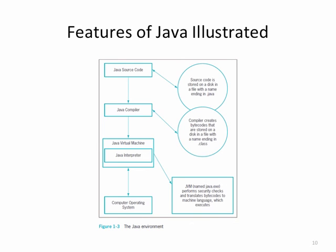For a visual of what we just talked about: the Java source code — what the programmer writes — has a file extension of .java. The Java compiler translates the Java source code into bytecode that will be run on the Java Virtual Machine. The JVM has the Java interpreter embedded there, and it communicates with the operating system — iOS on a Mac, Windows on a PC, or something else depending on the device such as your car, microwave, or refrigerator.